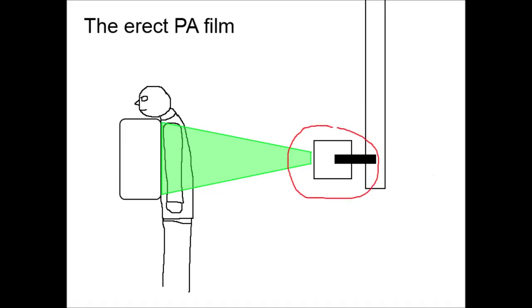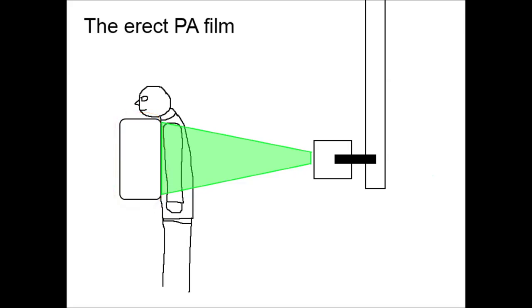This is the x-ray beam emitter, which fires a cone-shaped beam of radiation towards the patient. And this is the cassette, where the x-rays are absorbed — some magic happens and a picture is made. Honestly, I don't know exactly how it works.